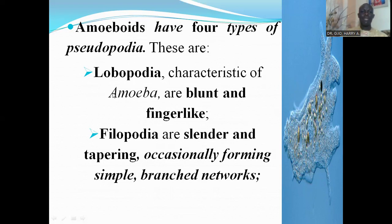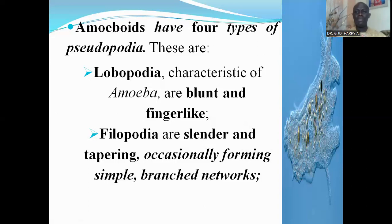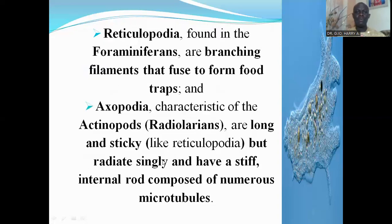The second type of pseudopodia are filopodia, which are usually slender and tapering, pointed at the extremities, and occasionally forming simple branched networks. The next type found among the amoeboid protozoans are reticulopodia, which are found in the foraminiferans in the phylum Foraminifera.